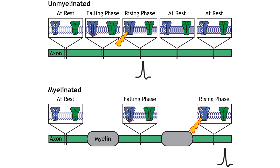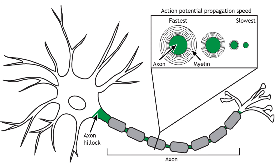The diameter of the axon also affects speed. The larger the diameter of the axon, the faster the propagation of the action potential down the axon. A larger axon leads to less resistance against the flow of ions, so the sodium ions are able to move more quickly to cause the regeneration of the action potential in the next axon segment.